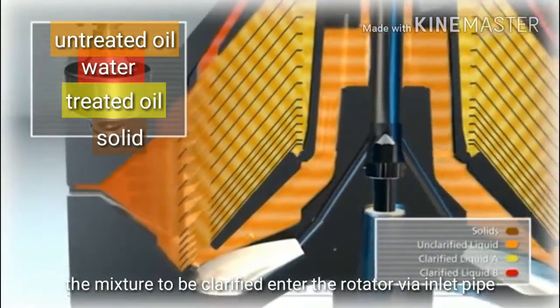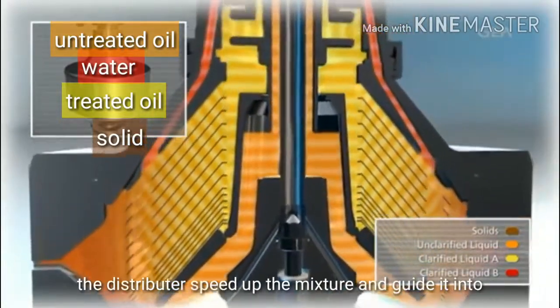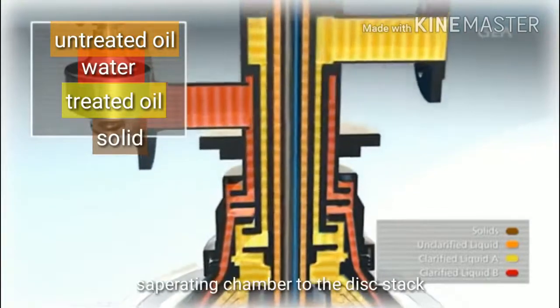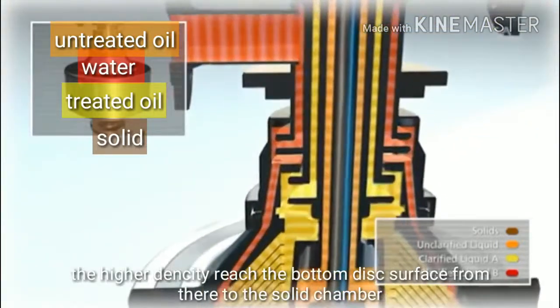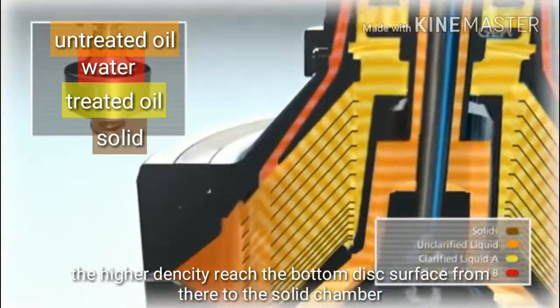The mixture to be clarified enters the rotor via a centrally positioned inlet pipe. The distributor speeds up the product and guides it into the separating chamber to the disk stack. Their higher density means that they reach the bottom disk surface and move from there to the solids chamber.